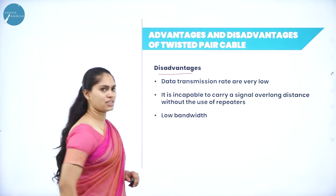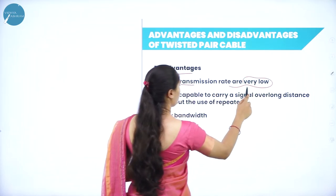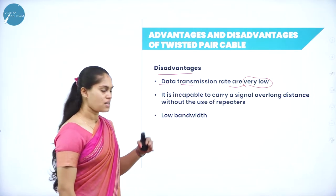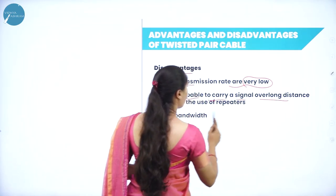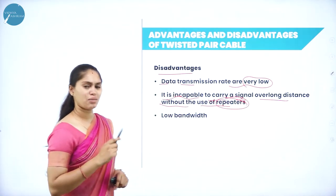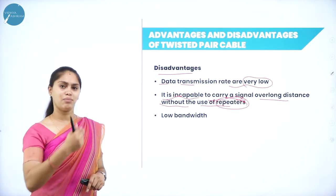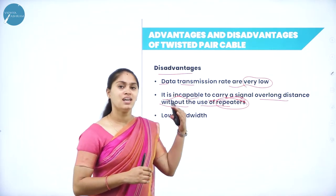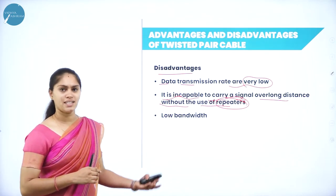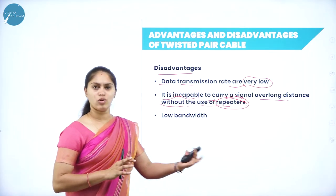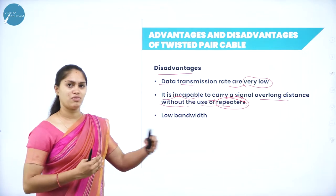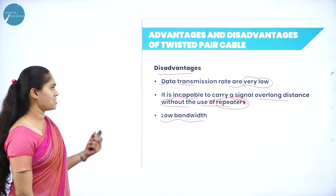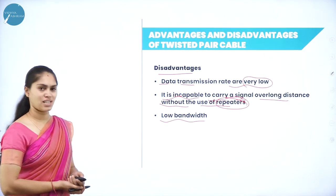The disadvantages of twisted pair cable are: data transmission rate is very low compared to other transmission media, and it is incapable of carrying signals over long distances without repeaters. Repeaters are always required to strengthen signals, and the cable has low bandwidth.